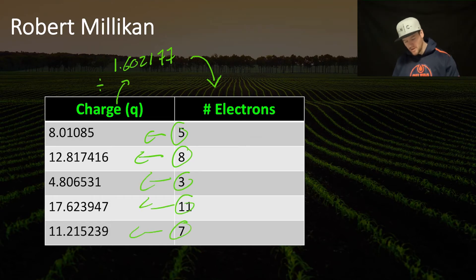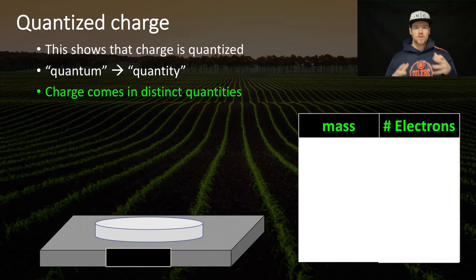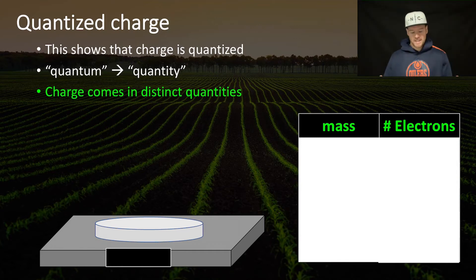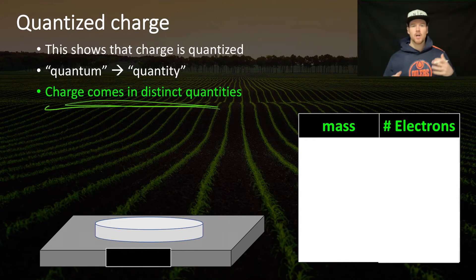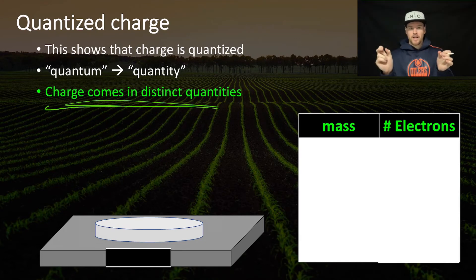That is the common multiple, so we know that must be the smallest amount that a charge can come in. This determined that the charge was quantized. Quantum just means quantity — all we're saying is that charge comes in distinct quantities. Electrons are the smallest amount of charge that we can have moving from one object to another. You don't get the charge of half an electron transferred onto another object.